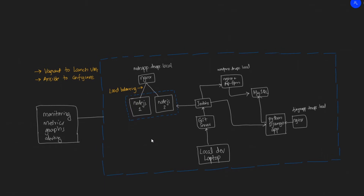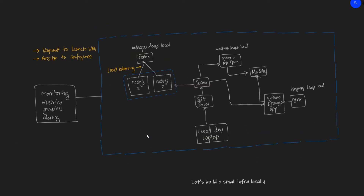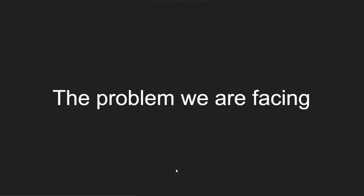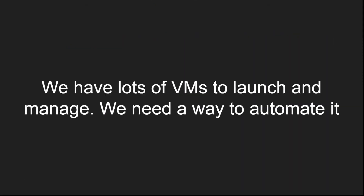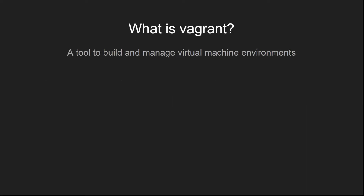Hello everyone, welcome back. In the previous video we talked about Ansible and writing Ansible playbooks, configuring a virtual machine using Ansible. If we take a look at our infrastructure that we are planning to build, there are a lot of virtual machines - at least 10 from this diagram. Installing and configuring each of these virtual machines manually is going to be a pain, take a lot of time, and a lot of repeated work. So we need some sort of tool to automate that - that's where Vagrant comes into the picture.